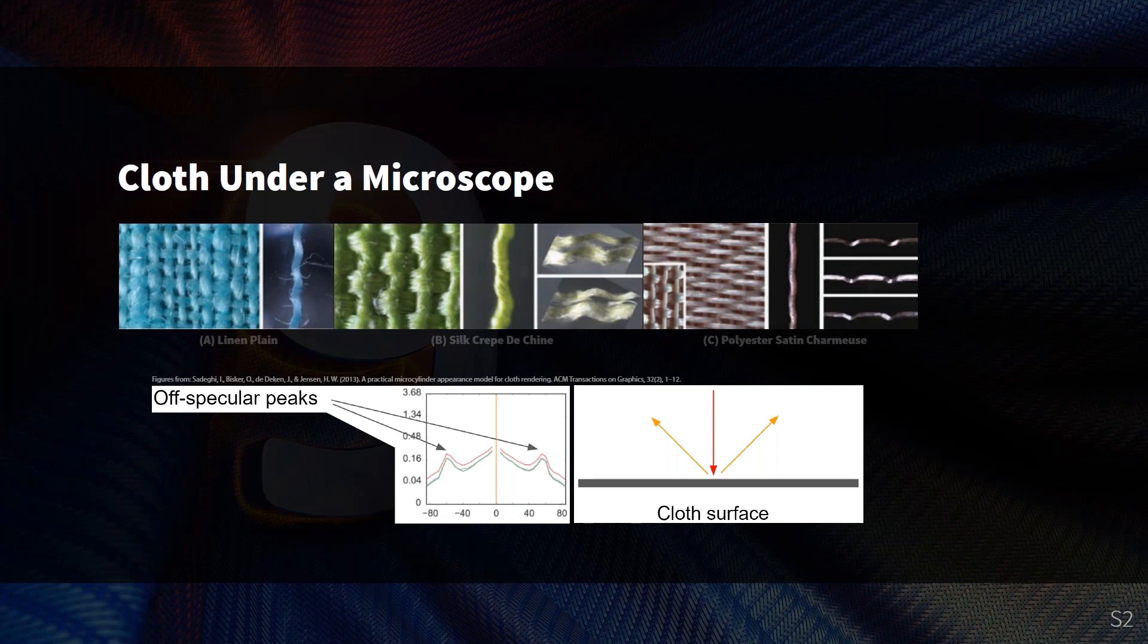As you can see in one of the graphs below, if you light silk at normal incidence, like straight down and hit it just at the top, you will actually see two highlights at what we call off-specular peaks. So these highlights are not located where a highlight would normally appear on a rough surface, but is tilted with respect to the normal.